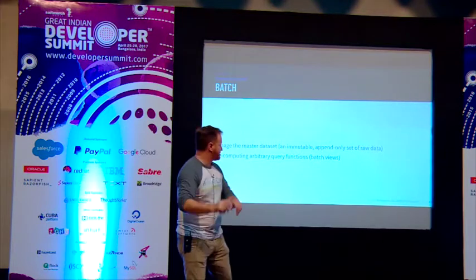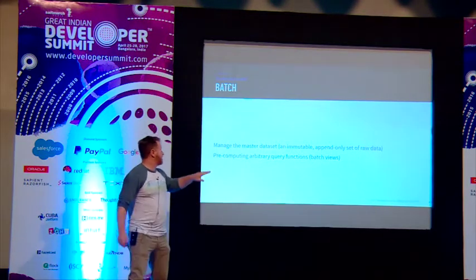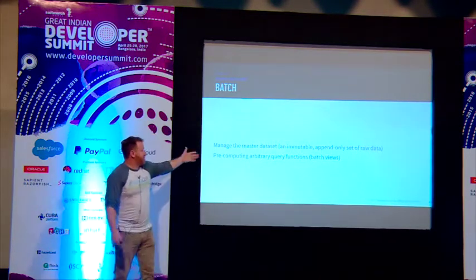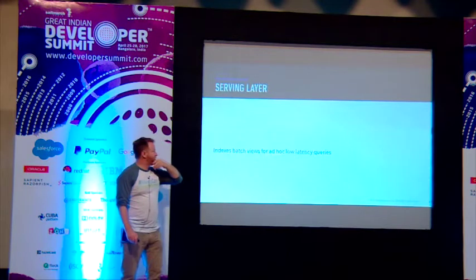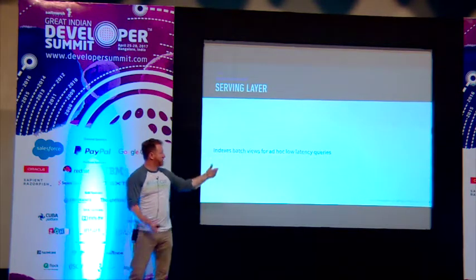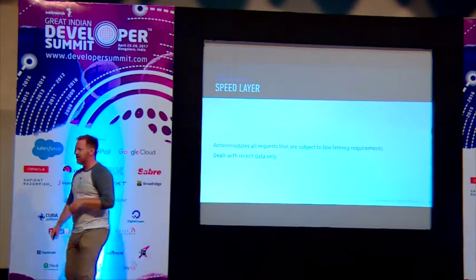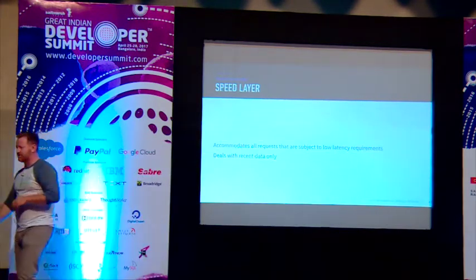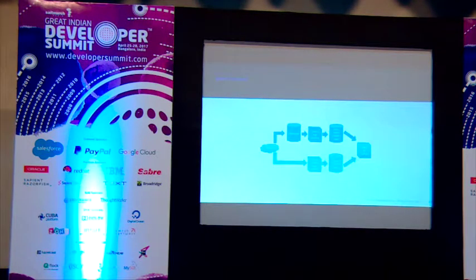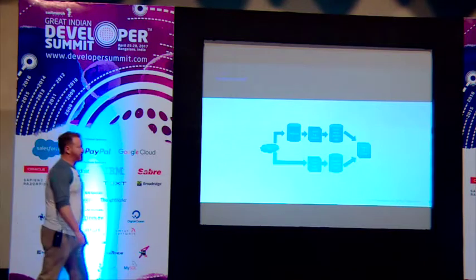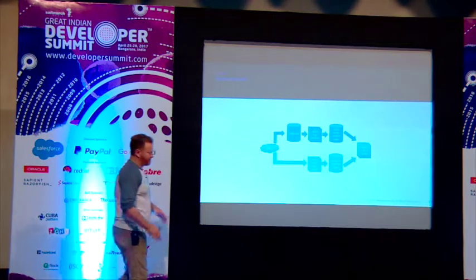In the batch layer we have immutable data coming in that we're going to batch. We have a serving layer where we're going to serve up queries. And then we have the speed layer. We're going to see how this all fits together in just a second. So where does the lambda architecture fit in?